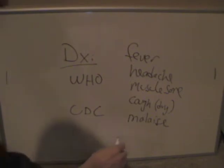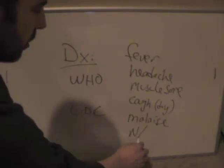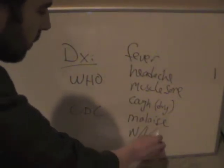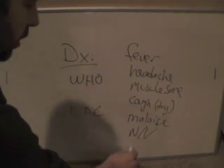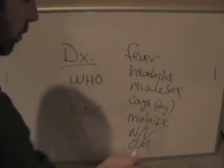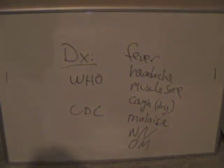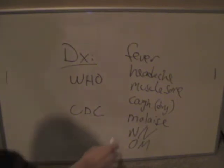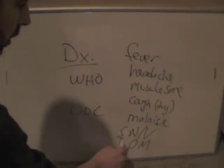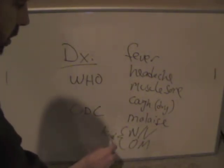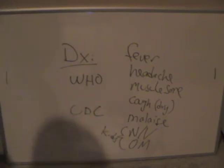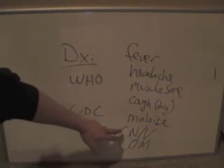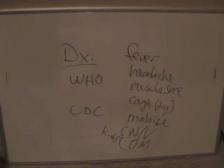The CDC adds nausea and vomiting with kids, as well as otitis media, which is ear infection. This is mostly seen in kids according to the CDC, but many times I've seen adults also complaining of nausea and vomiting as part of their influenza constellation.